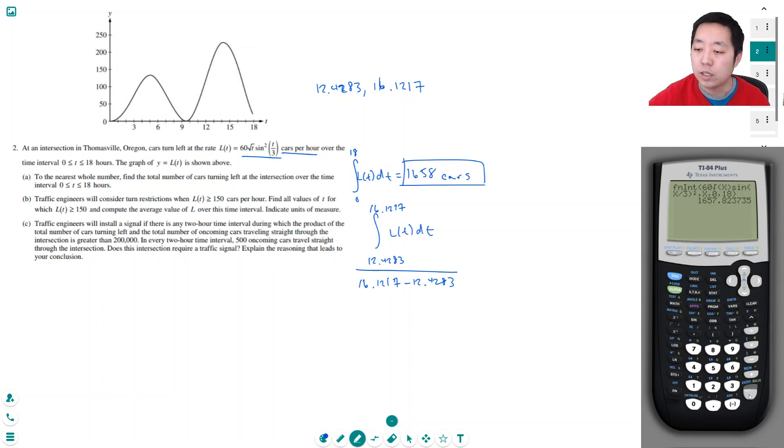So let's calculate this. I can use my previous thing, except instead of going from 0 to 18, I'm going to go 12.4283 all the way to 16.1217. And then I'm going to divide it by the interval width, which is 16.1217 minus 12.4283.